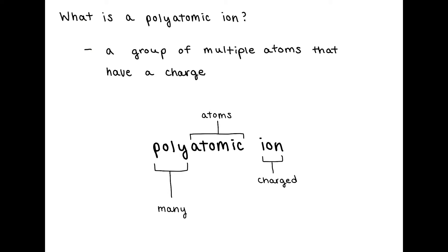So what is a polyatomic ion? A polyatomic ion is an ion, meaning it's charged either positively or negatively, and it's a group of atoms that contain that charge as a unit. If we break down the word polyatomic ion: poly meaning many, atomic referring to many atoms, and ion meaning charged either positively or negatively.